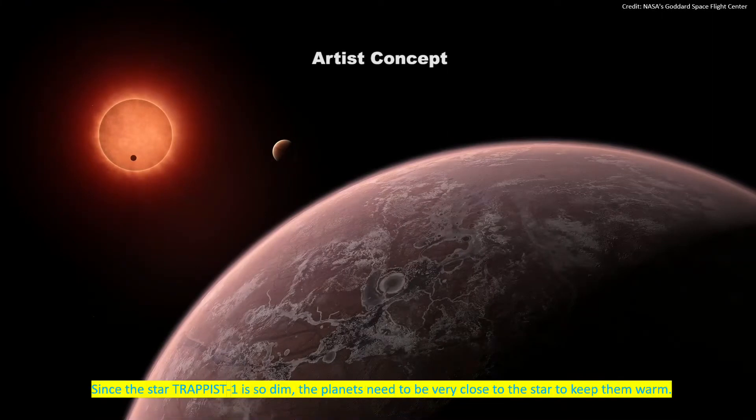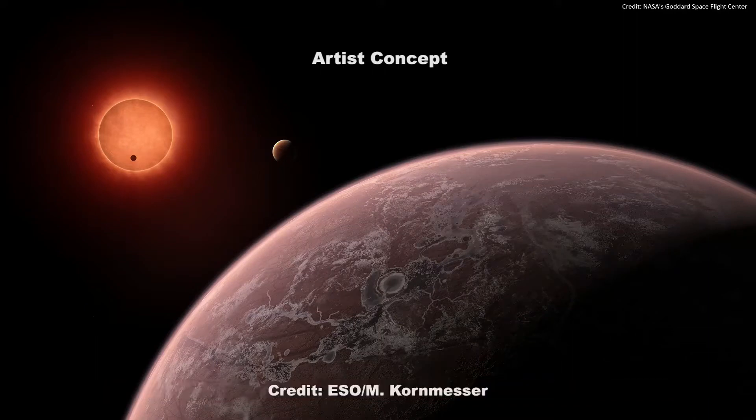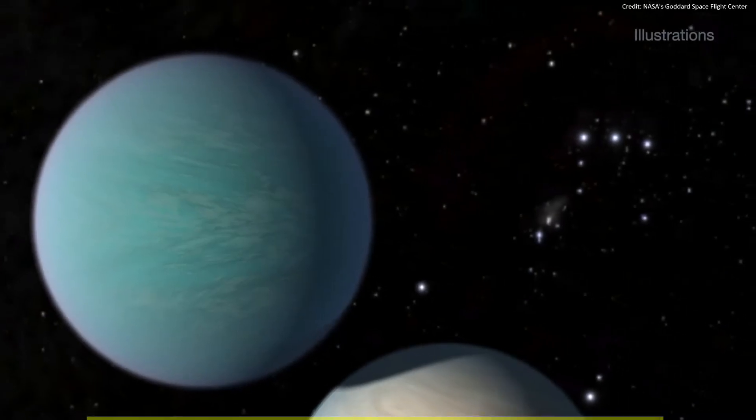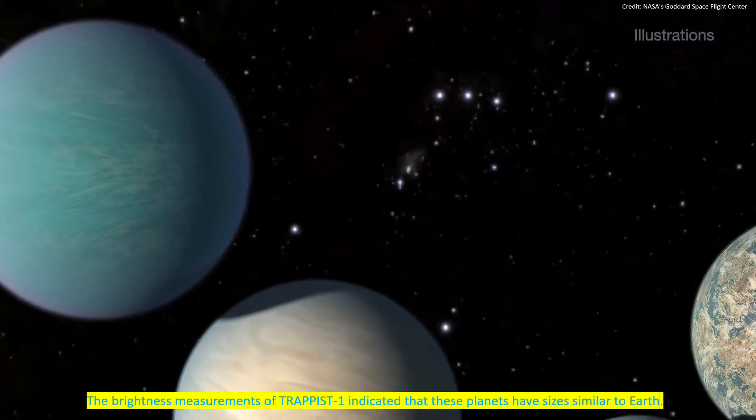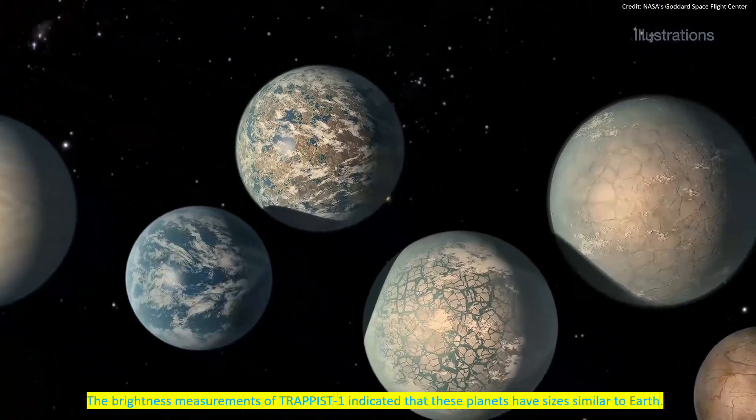Since the star TRAPPIST is so dim, the planets need to be very close to the star to keep them warm. The brightness measurements of TRAPPIST indicated that these planets have sizes similar to Earth.